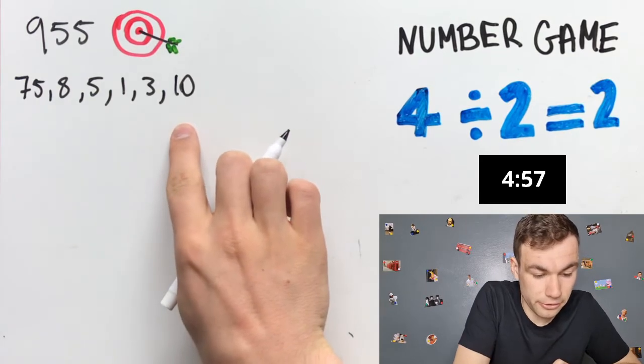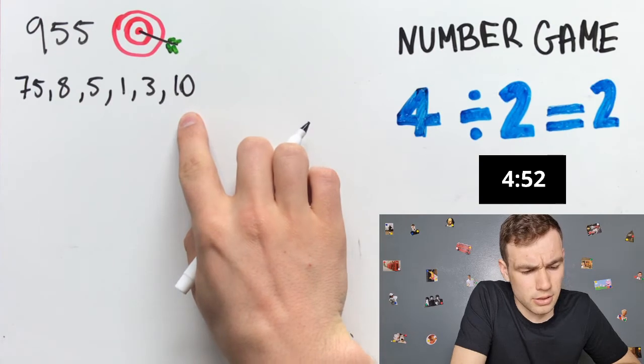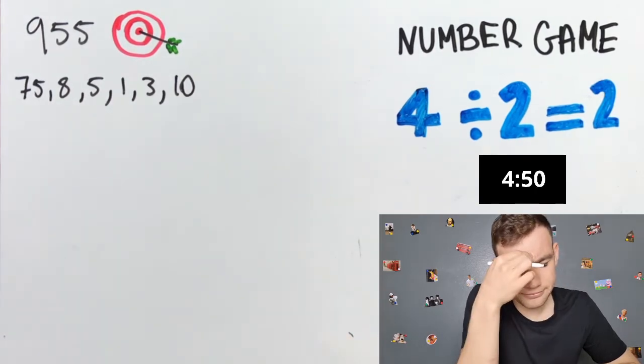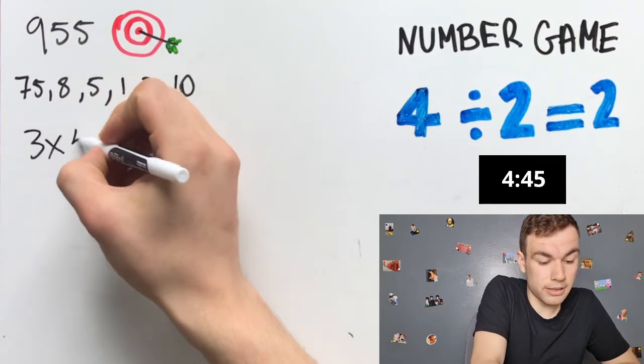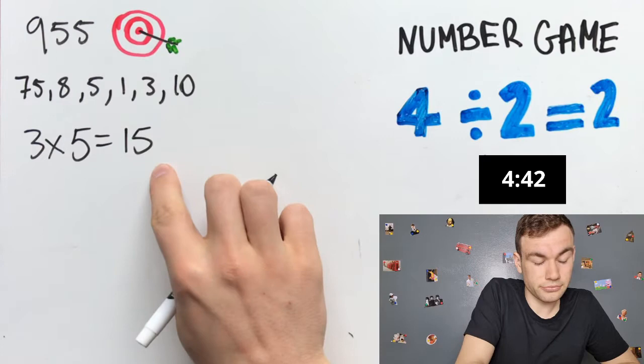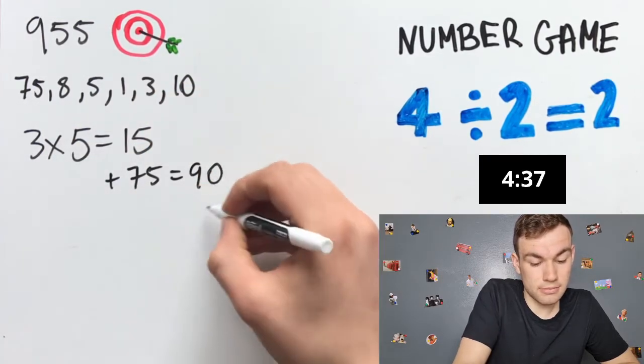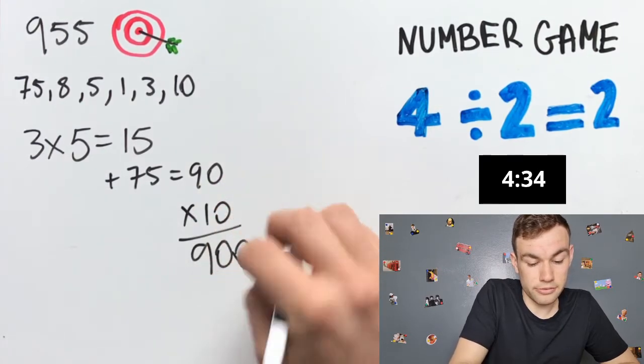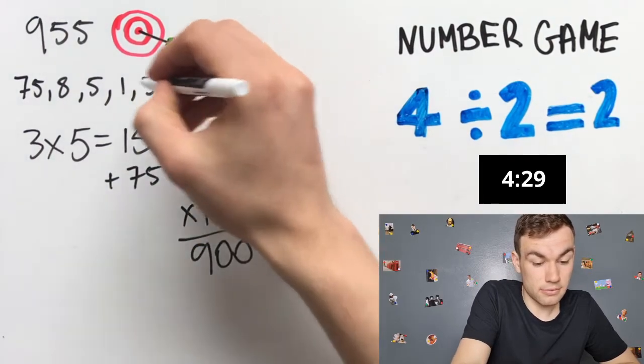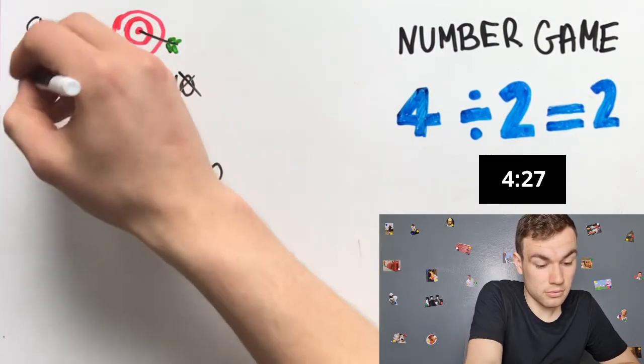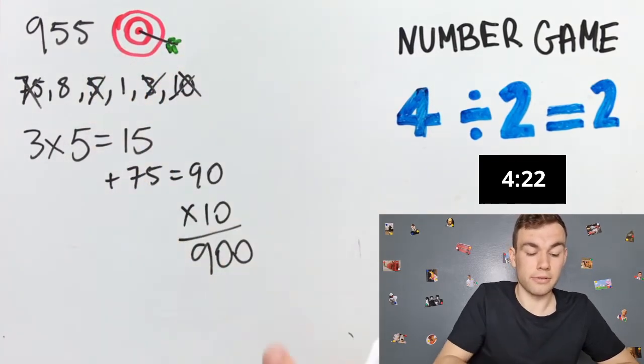These are our numbers. 75... three multiplied by five is equal to 15, plus 75 is equal to 90, multiplied by 10 is equal to 900. So, we have used three and five, 75 and 10. No, we cannot get 955 from that.